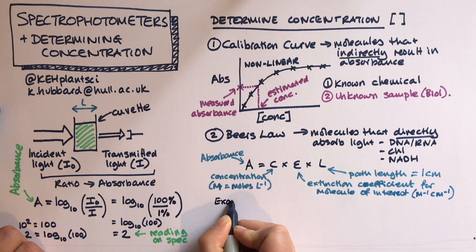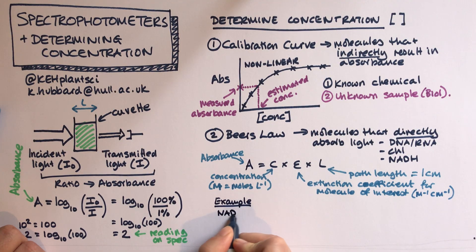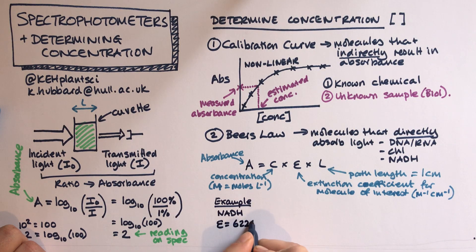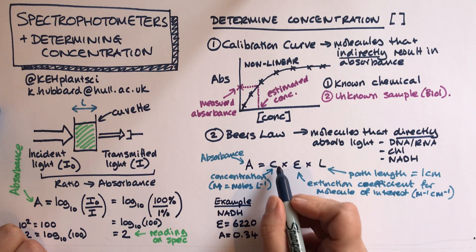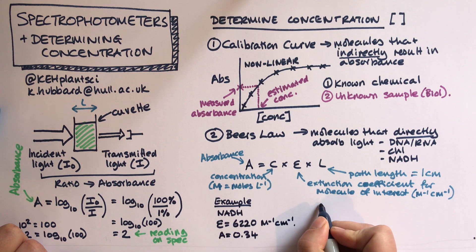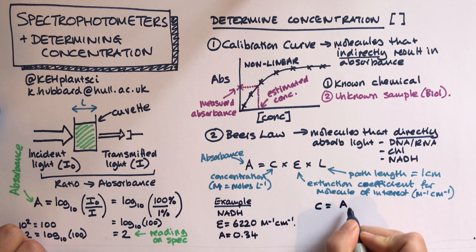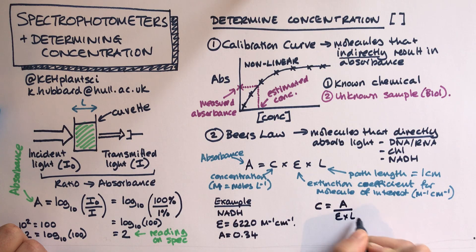Let's do an example. Let's say that you're interested in measuring NADH. NADH has an extinction coefficient of 6220 moles per centimeter, and let's say that you measure the absorbance to be 0.34 on your spectrophotometer. I can rearrange this equation because I know the absorbance and I'm trying to find out the concentration.